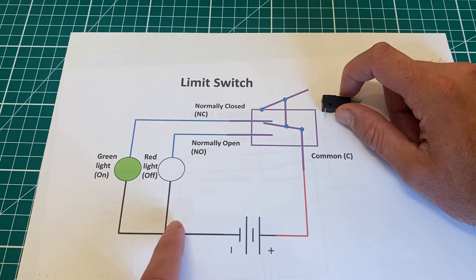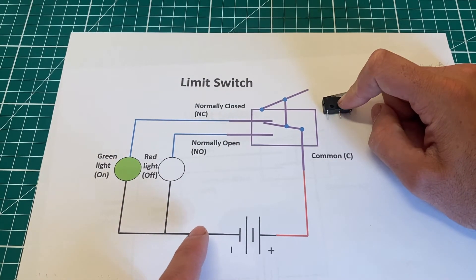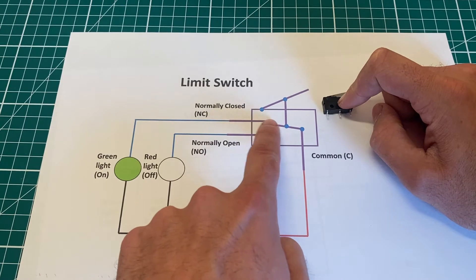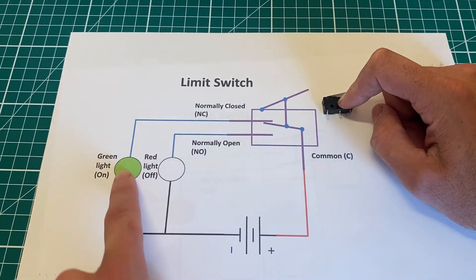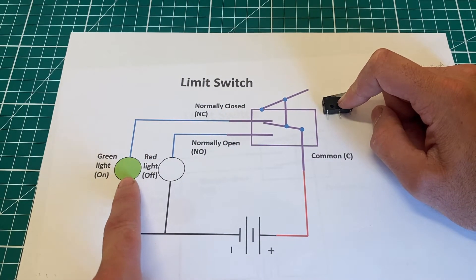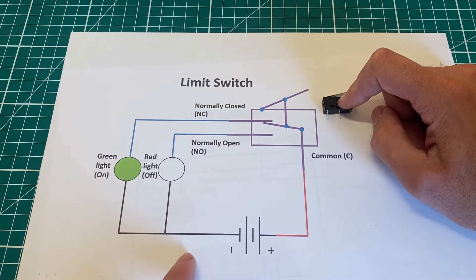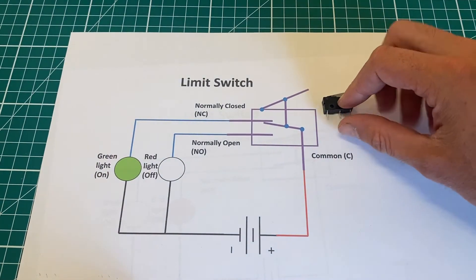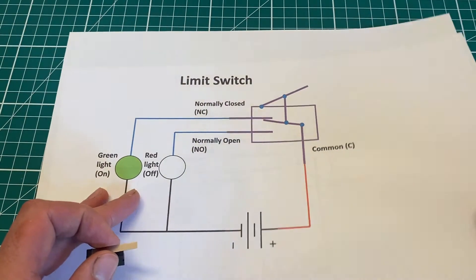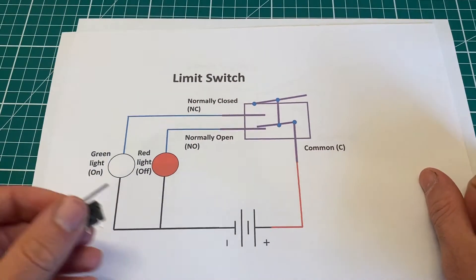Now in this situation, when the lever is not being pressed, you can see that it travels all the way around and comes out normally closed and goes through the green light, turning it on, and back to the battery. Okay, and our red light is not on.